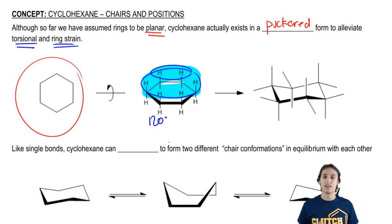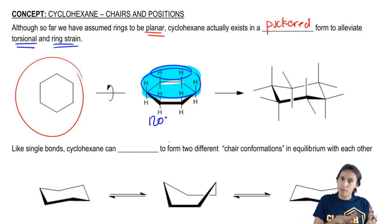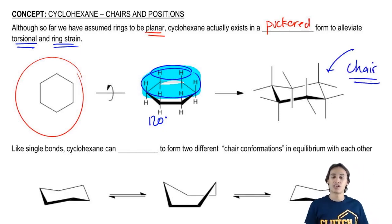So what winds up happening is that it bends a little bit to form what we call a chair. And the chair is almost like the perfect cyclohexane because it has pretty much no ring strain and no torsional strain.